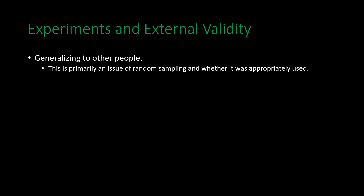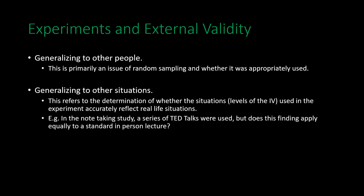When it comes to experiments and external validity, two primary concerns are how well results generalize to other people and to other situations. Generalizability to other people is often not a problem with the experiment itself but with how participants were sampled — so long as people are relatively randomly selected from the population of interest, we can assume relatively high external validity. Regarding other situations, this refers to whether the conditions used in the experiment accurately reflect real-life situations. For example, in the note-taking study, TED talks were used to simulate lectures, but it is unclear whether note-taking from TED talks generalizes to actual classroom or seminar settings.